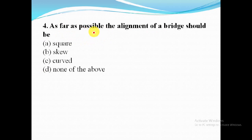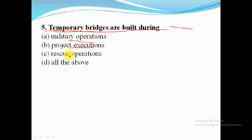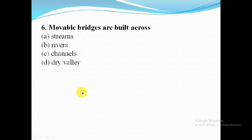Fourth question: as far as possible, the alignment of a bridge should be square. Fifth question: temporary bridges are built during military operations, during project executions, and also for rescue operations. So for this question, option D — all of the above — is the correct answer. Movable bridges are built across channels.